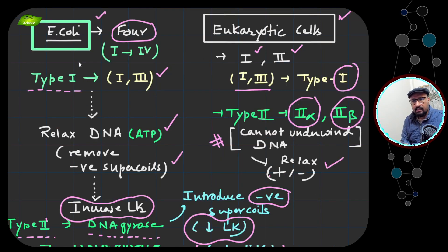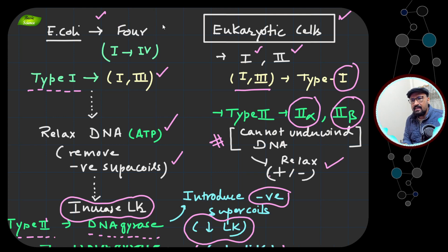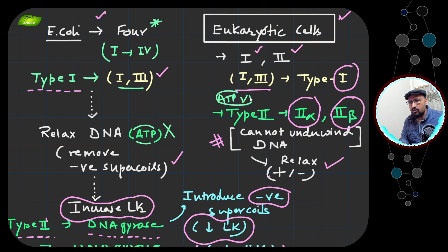Looking at examples in E. coli — a well-studied bacterium — there are four types of topoisomerases (I through IV). Topoisomerases I and III are Type 1 and do not use ATP; energy comes from the phosphodiester bond. Type 1 will relax the DNA and remove negative supercoils, which increases the linking number.